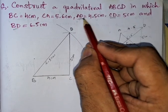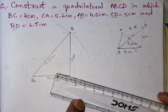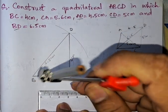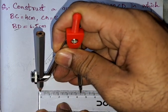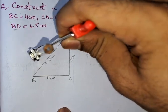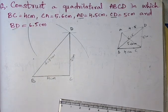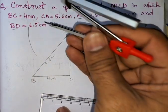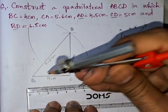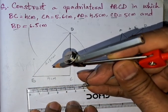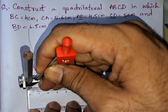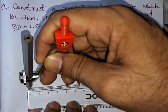Now we have point D. From A to D it is 4.5 centimeters, so we draw an arc of 4.5 centimeters from D. Next, from C to A — that is the diagonal — it is 5.6 centimeters, so we draw an arc of 5.6 centimeters from C. The intersection gives us point A.